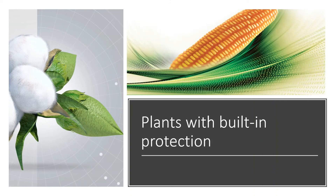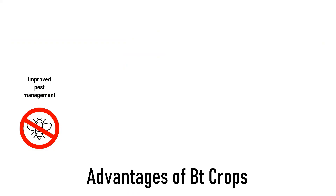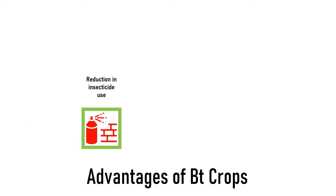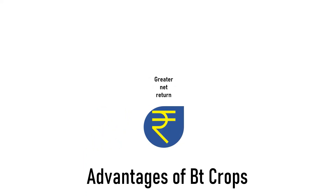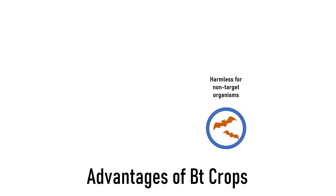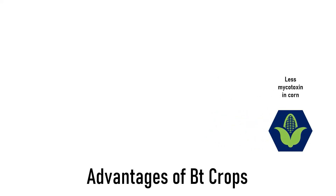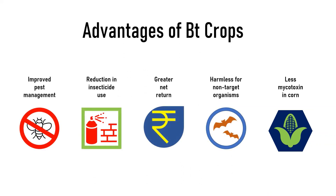Currently, the most common Bt crops are corn and cotton. Advantages of Bt crops include: improved pest management, reduction in insecticide use, greater net return, harmless effects for non-target organisms, and less mycotoxin contamination in corn. These are the different advantages of Bt crops.